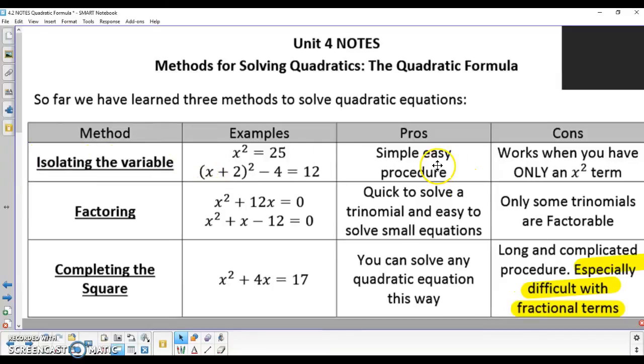So isolating the variable is very easy, factoring is an easy process, and completing the square works for all, but they all have their cons. This leads us to a question of what can we do now?